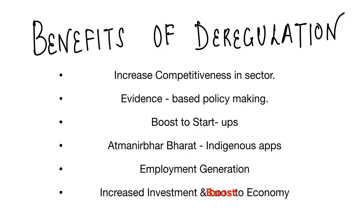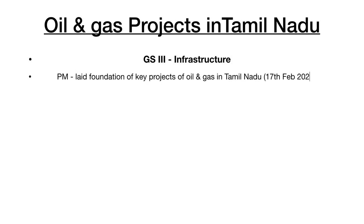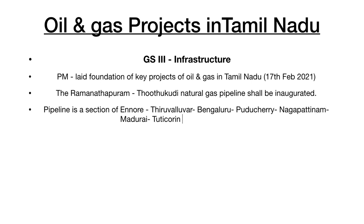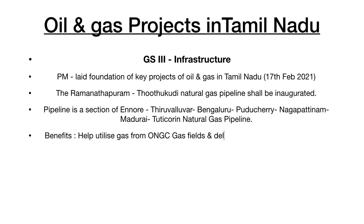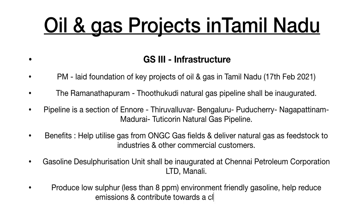The next headline is about oil and gas projects in Tamil Nadu — a part of GS Paper 3. The Prime Minister laid the foundation of key projects of oil and gas in Tamil Nadu. The inauguration includes the Ramanathapuram–Thoothukudi natural gas pipeline, which is a section of the larger Ennore–Trichy–Thanjavur–Bengaluru–Puducherry–Nagapattinam–Madurai–Thoothukudi natural gas pipeline. A gasoline desulphurization unit at Chennai Petroleum Corporation Limited was also inaugurated, which will produce low-sulfur output of less than 8 parts per million — making it eco-friendly.